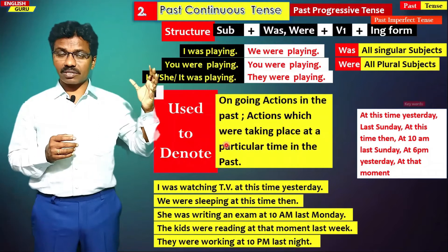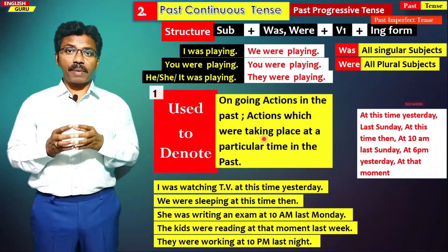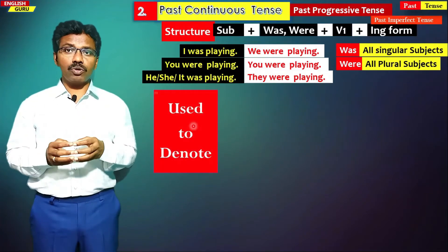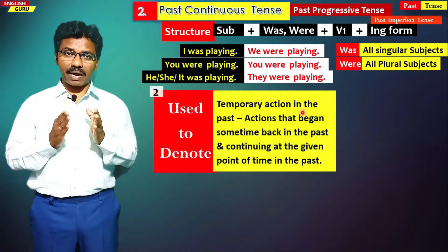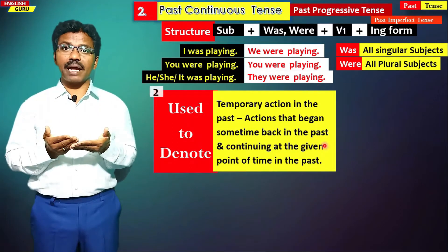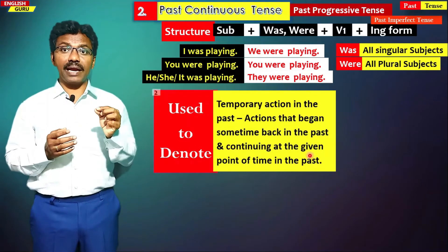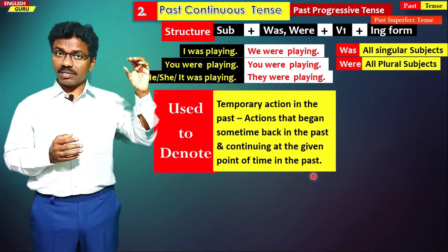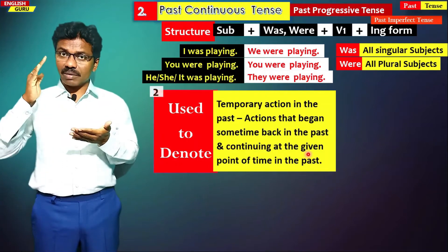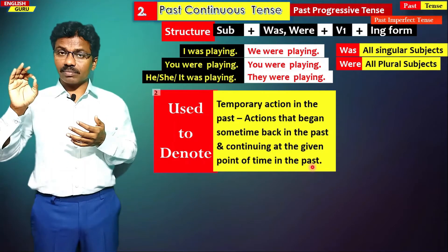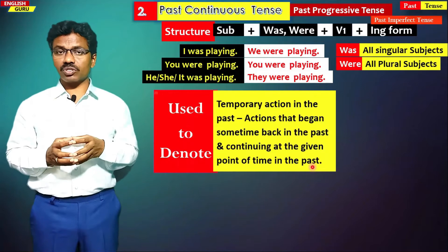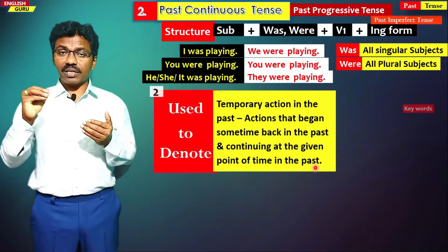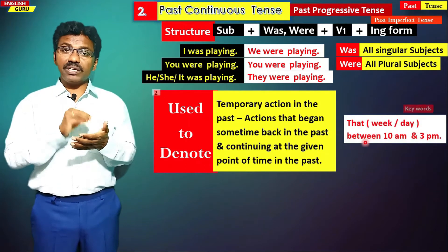There is one more use of past continuous tense. It is used to talk about temporary actions in the past — actions that began sometime in the past and continued at a given point of time in the past. They began at some time in the past and continued up to some time in the past. For such situations we use past continuous tense.